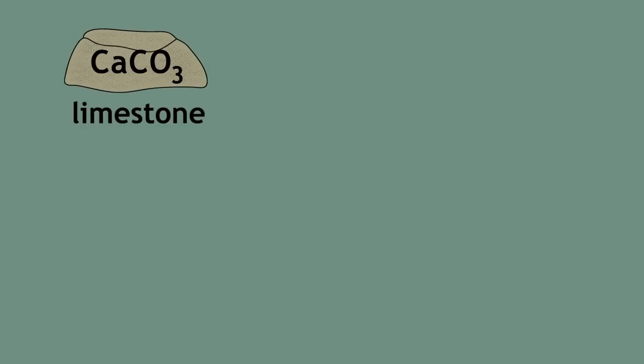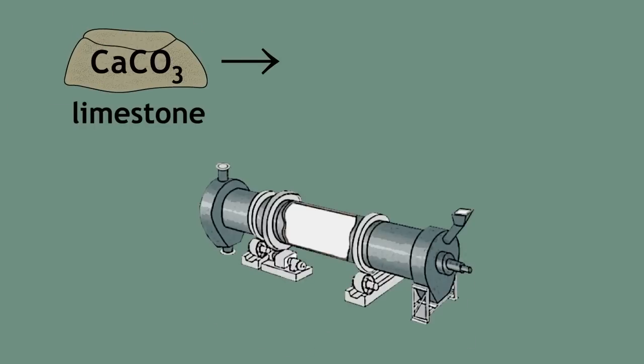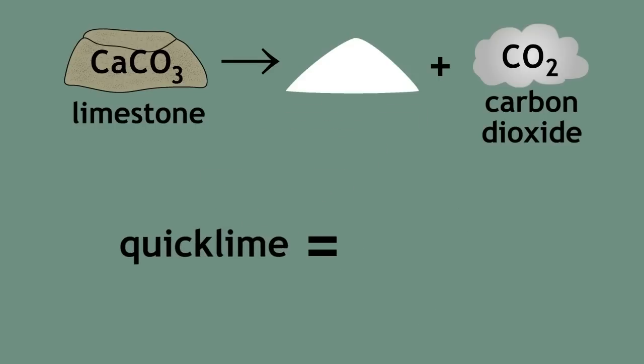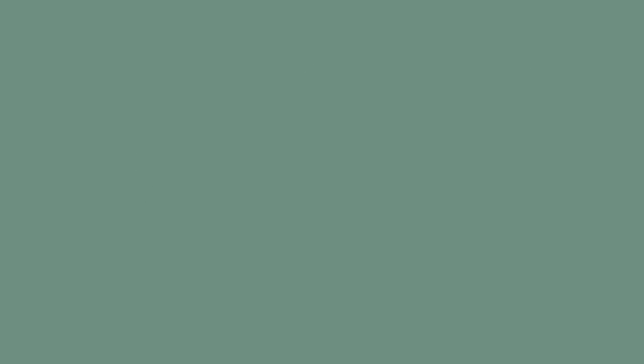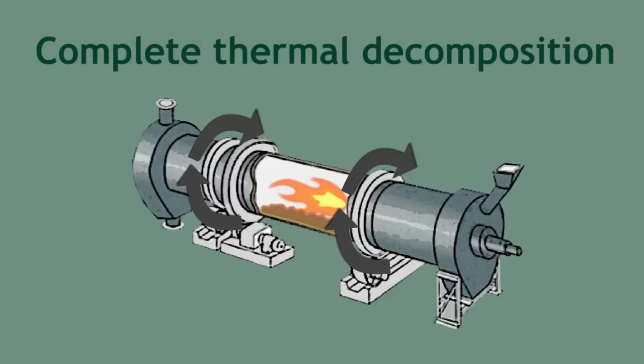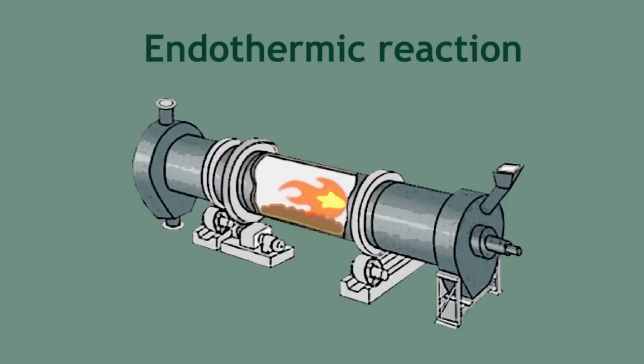Limestone can be thermally decomposed in a rotary kiln to give quicklime and carbon dioxide. The chemical name for quicklime is calcium oxide. A rotary kiln is a kiln that is able to rotate as the reaction proceeds. This helps to ensure complete thermal decomposition of the entire limestone sample. As this process requires heat, it is an endothermic reaction.